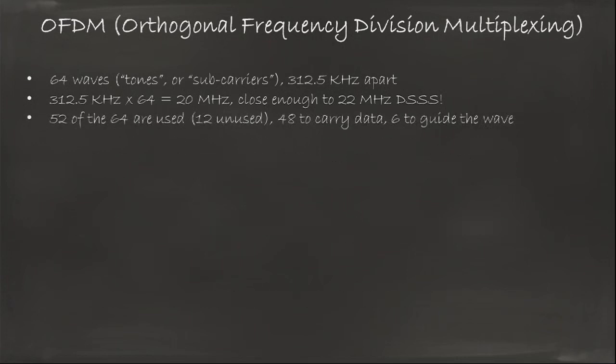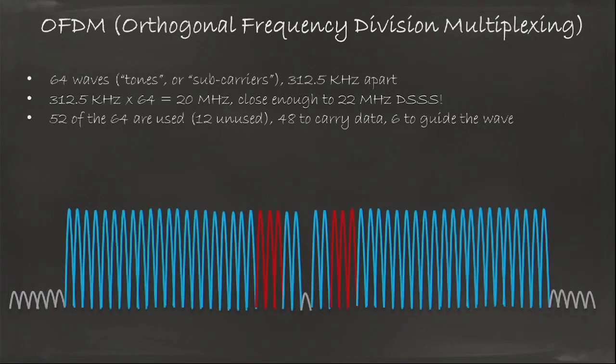Out of the 64 actually, not all of them are used. 12 are not used. 48 are used to carry data and 6 are used to guide the wave. You have the bottom 6 and the top 5 that are not used. They are stayed flat. You don't send anything there. There is no wave. That's to make sure that you distinguish one channel from the other. If you have the next transmission just nearby on the next channel, you want to have some neutral ground in between to avoid noise.